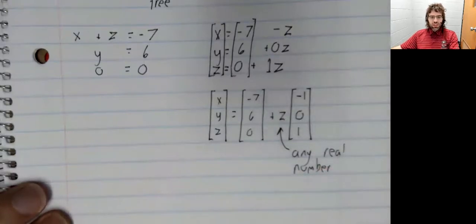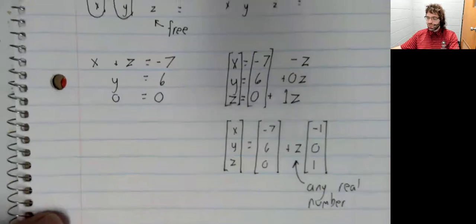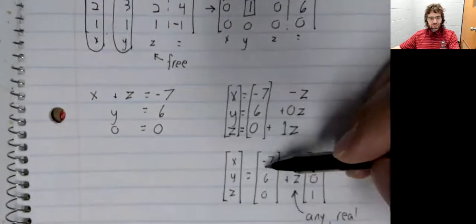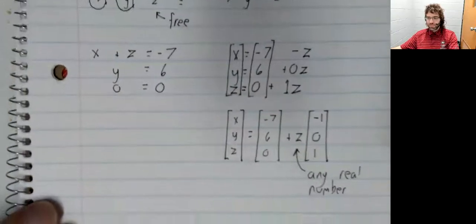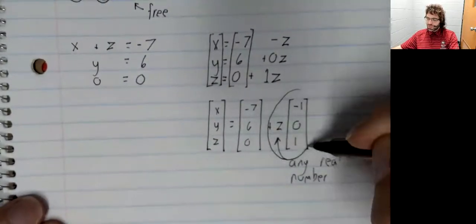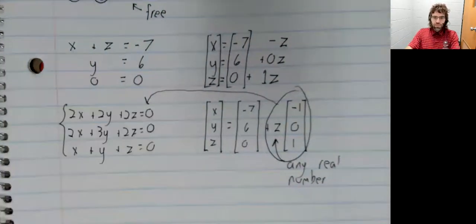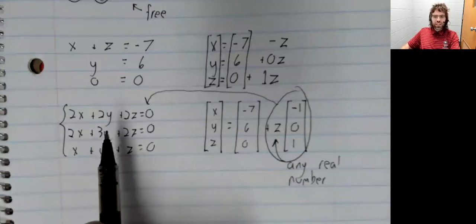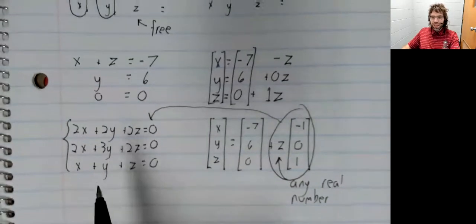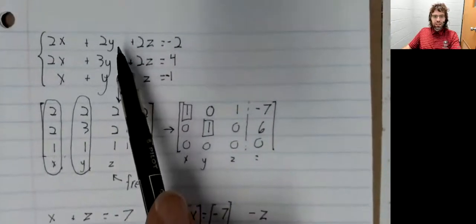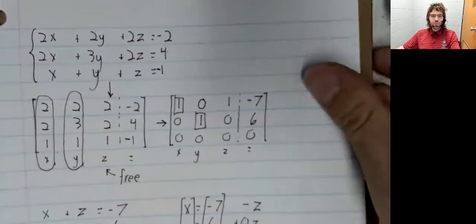And what was that I was saying about associated homogeneous systems? Well, this is a solution to this homogeneous system, in particular to the homogeneous system we get by taking this and turning this, this, and this into zero.